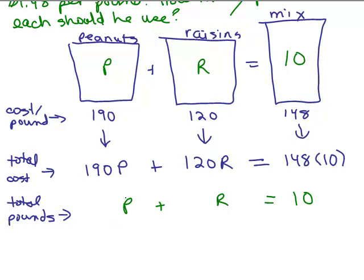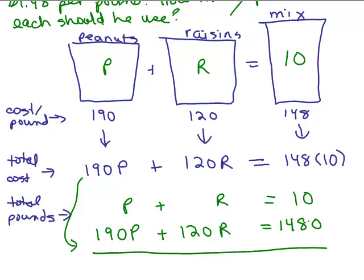And I'm going to write it under here. So this equation here could be written as 190P plus 120R equals 1480. Alright, so now we've got these two equations to deal with. So let's put those on another page to keep going.